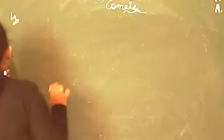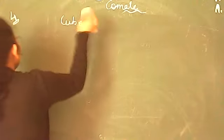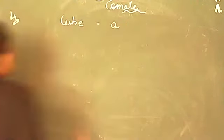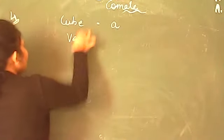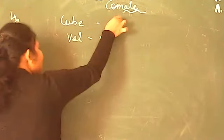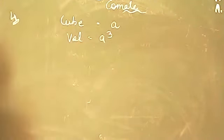Question number 4 asks what happens to the volume of a cube if the length of the edge becomes double. This is inspired by NCERT. For a cube, let the edge be A. Then volume = A³. If the edge becomes double, the new edge = 2A.